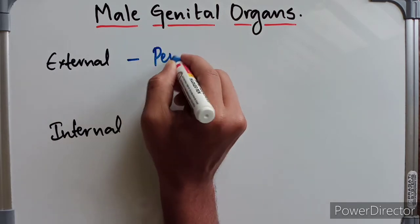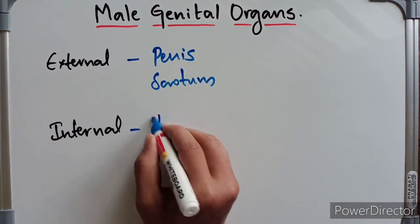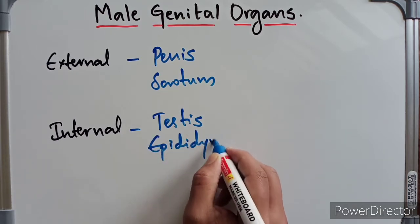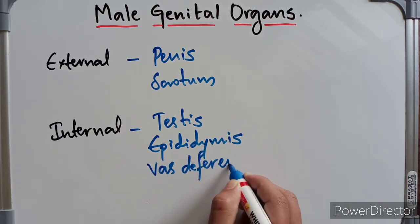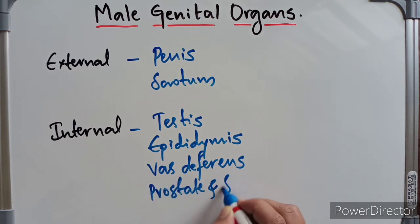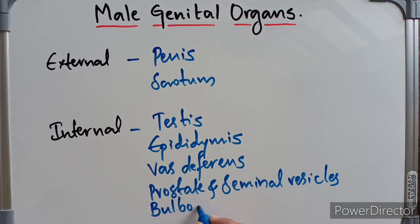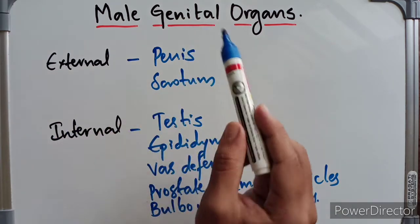In the external genital organs we have the penis and the scrotum. In the internal genital organs we have the testis, epididymis, vas deferens or ductus deferens, the prostate, the seminal vesicles, and the bulbourethral glands.